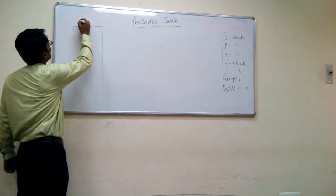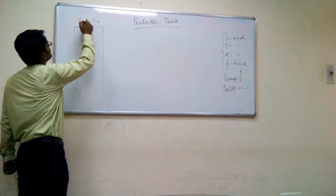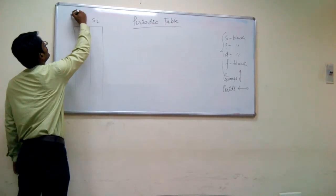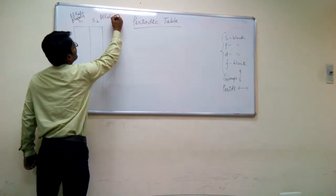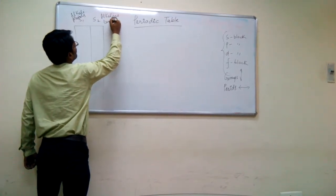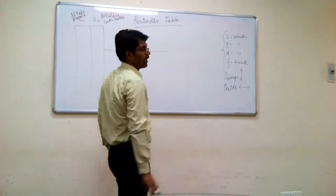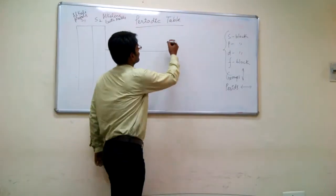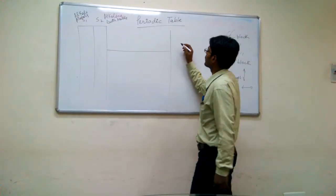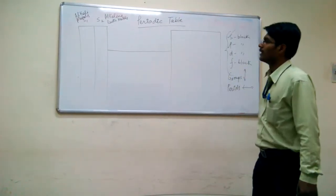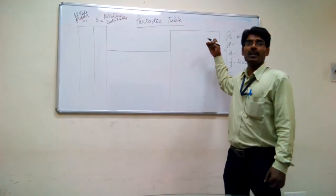I am drawing the S-block. S-block is only two columns, which we can say S1 and S2. Out of these two columns, the first one consists of alkali metals and the second one is alkaline earth metals. Now moving from this, we have D-block in between. Now let's talk about the P-block. The S-block is extremely left in the periodic table, and the P-block is extremely right.